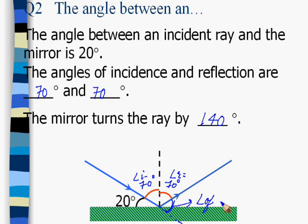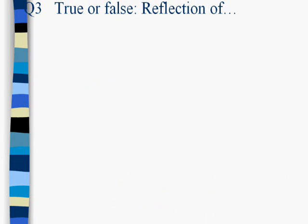This angle is called the angle of deviation, which shows us the deviation in the path of light after reflection. In this example, we can calculate how much deviation the light ray has suffered. If this angle is 20 degrees, then this angle should also be 20 degrees because of vertically opposite pairs of angles, and this angle should also be 20 degrees. Here the angle of deviation, denoted by the Greek letter delta, is 40 degrees.